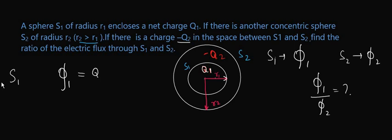So we can write down Q1 divided by epsilon 0. Now we will calculate the flux through S2. Phi 2 will be equal to, now look at the total charge. S2 is the largest sphere which has radius R2.